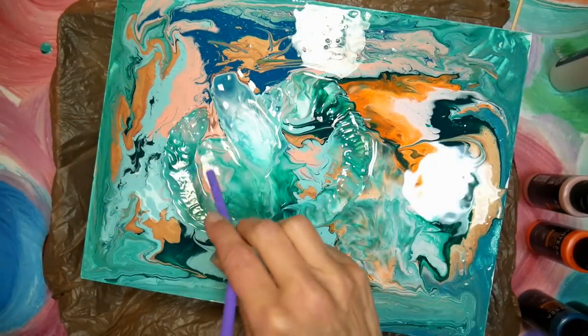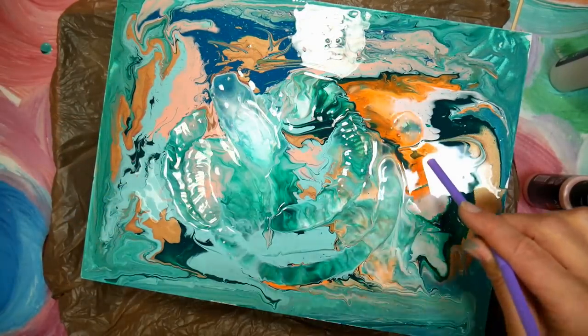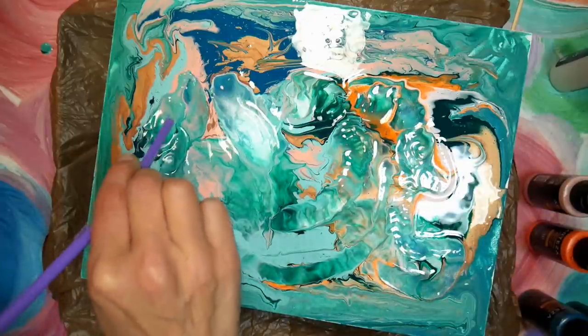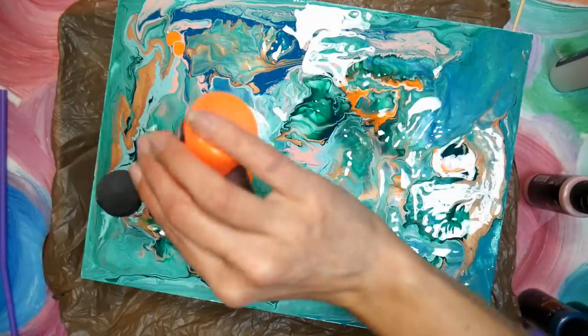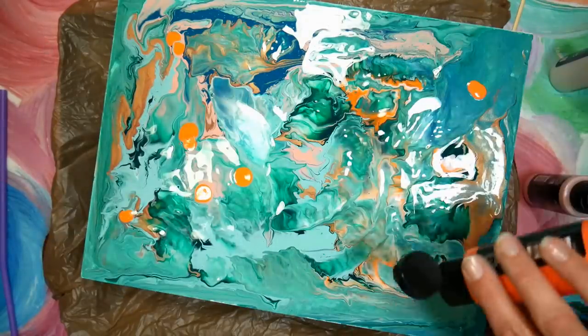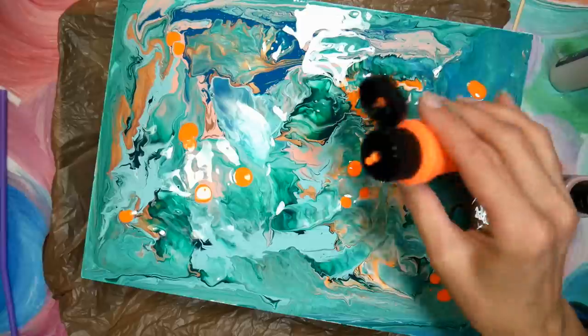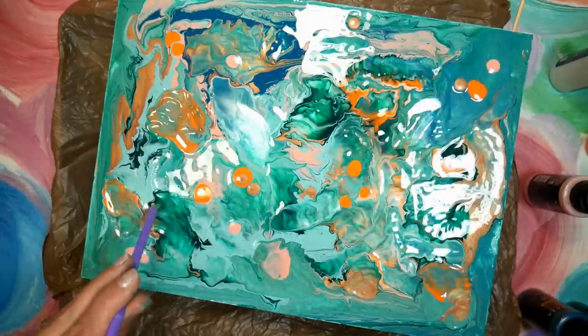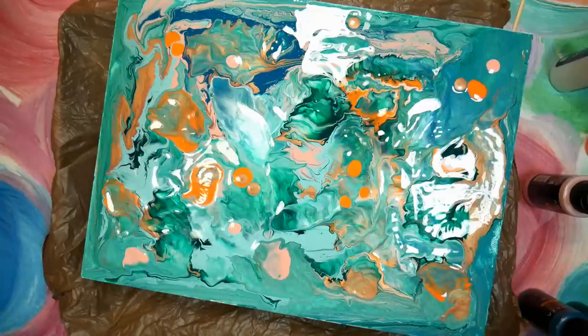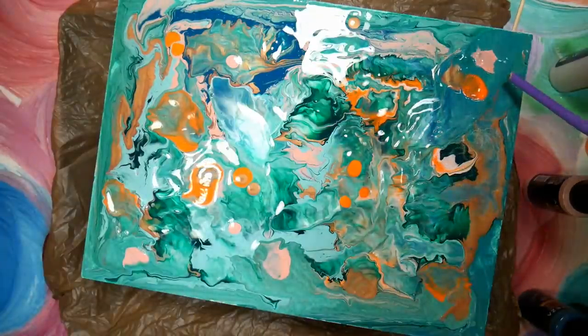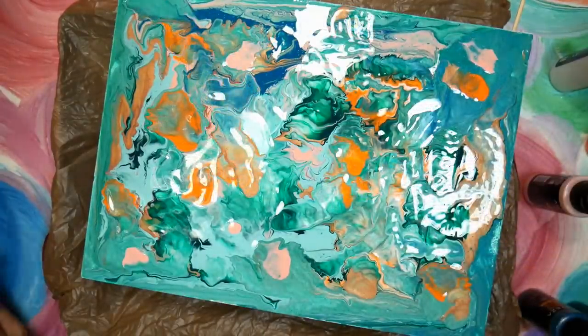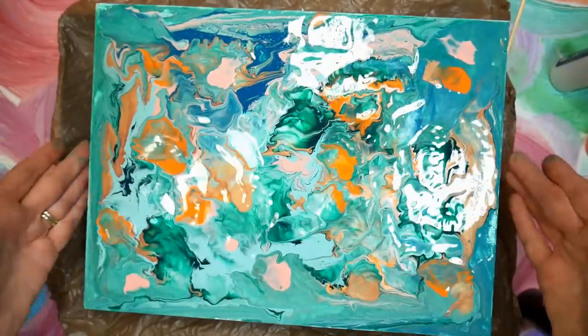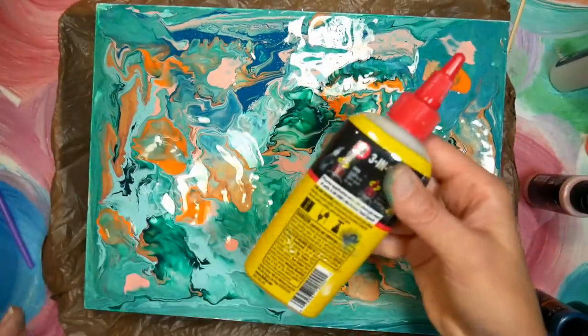But when you have a straw you can really push that paint around and get some really fun effects and you can do that as little or as much as you want. Now the more you do it the more your paint's gonna mix up and you might lose some of that beautiful effect like I did here. So I'm adding in some more orange just to bring back a little more contrast and make it a little more interesting. Then I'm just blowing a little puffs of air to help it move a little bit. And I'm really starting to enjoy the way this is looking. Again you can tip it and you know have it slide a little bit and get just the look you want.